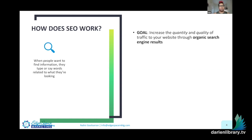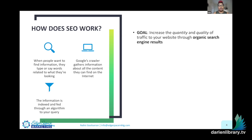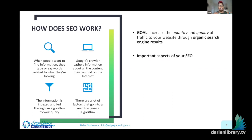When people want to find information on the internet, they type or say — because now we have Siri and Alexa — the words they're looking for. Google has a crawler that crawls across the internet, gathering information from websites and storing it in their giant data warehouse. That information is indexed based on SEO criteria and ranking factors. Once you put in your search criteria, Google goes into that database, tries to find websites that match your search criteria, and then displays them.